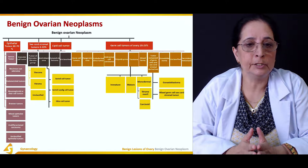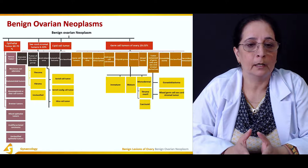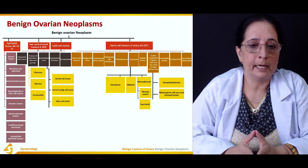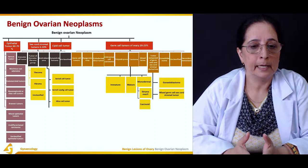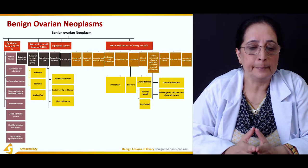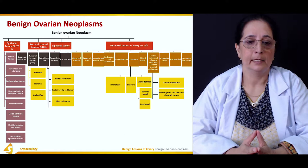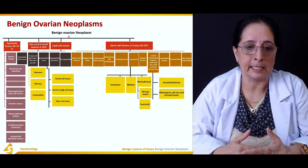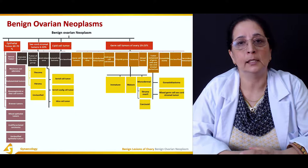Epithelial tumors are further subdivided into serous tumors, mucinous cyst adenomas, endometrioid tumors, mesonephroid or clear cell tumors, and Brenner tumors. There are also mixed epithelial tumors, undifferentiated, and unclassified types — these three categories are used when tumors cannot be clearly placed into a specific classification.